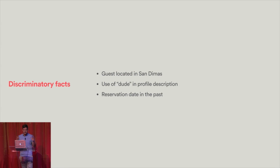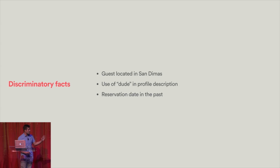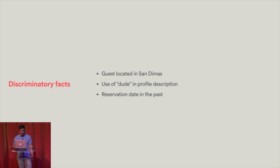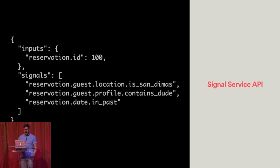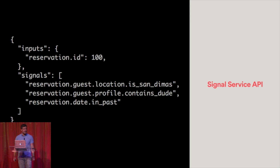Let's get back to the example of how we're going to catch those time travelers. We need discriminatory facts that will make up the features we're going to use in our system. In this case, the guest being located in San Dimas, the use of the word 'dude' in the profile description, and a reservation date in the past are the contrived examples of things we're going to use to predict this particular attack vector. The API looks something like this, where you provide inputs — in this case, the reservation ID — and then the signals you want to get out: whether the guest is located in San Dimas, whether the profile contains the word 'dude', and whether the reservation date is in the past.